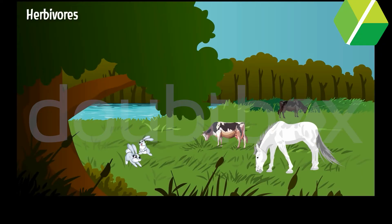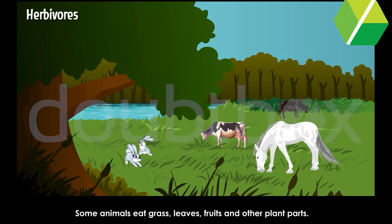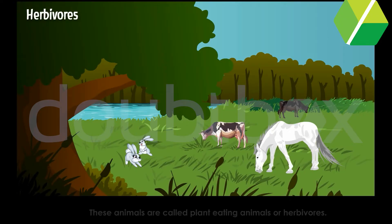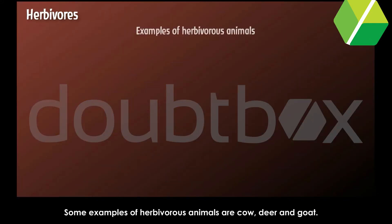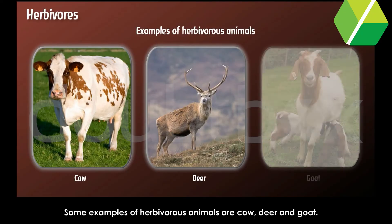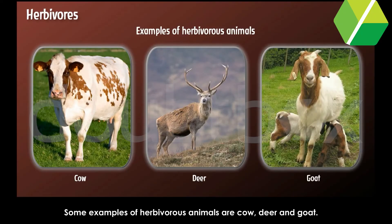Herbivores. Some animals eat grass, leaves, fruits and other plant parts. These animals are called plant-eating animals or herbivores. Some examples of herbivorous animals are cow, deer and goat.